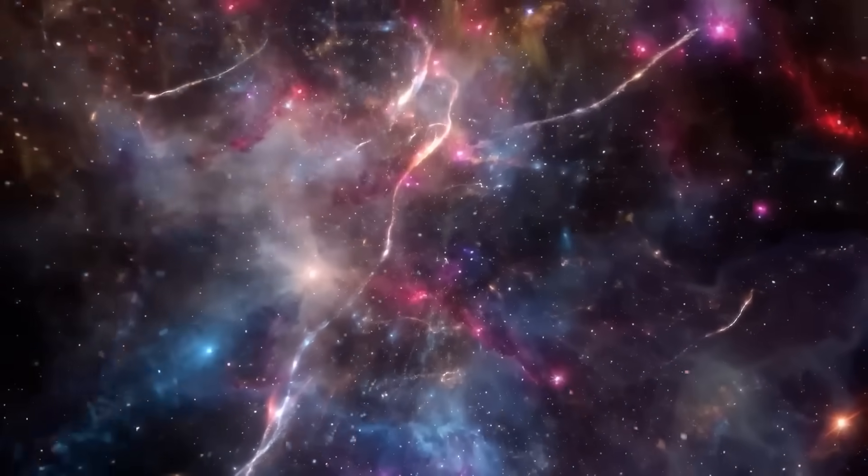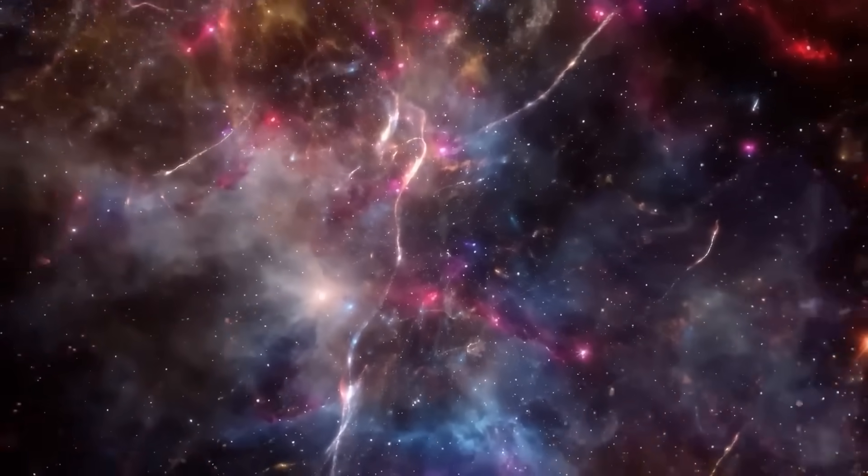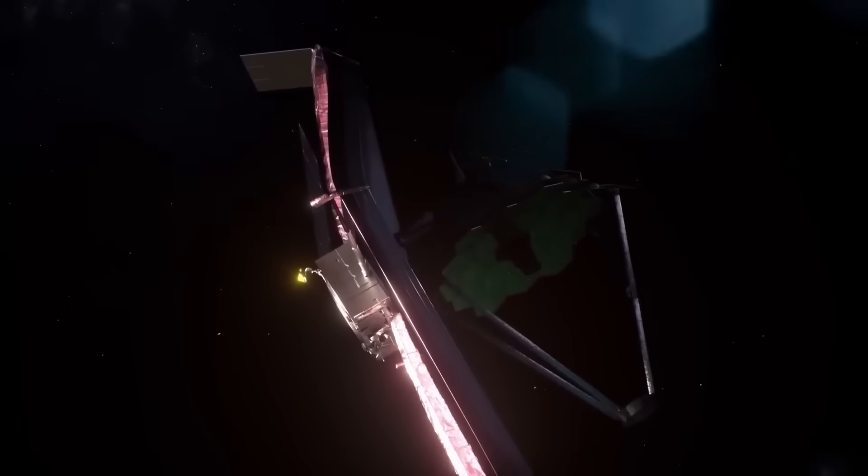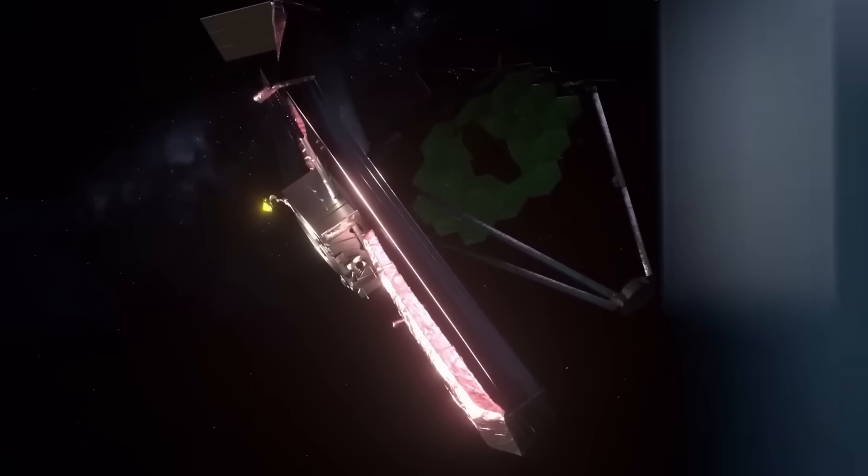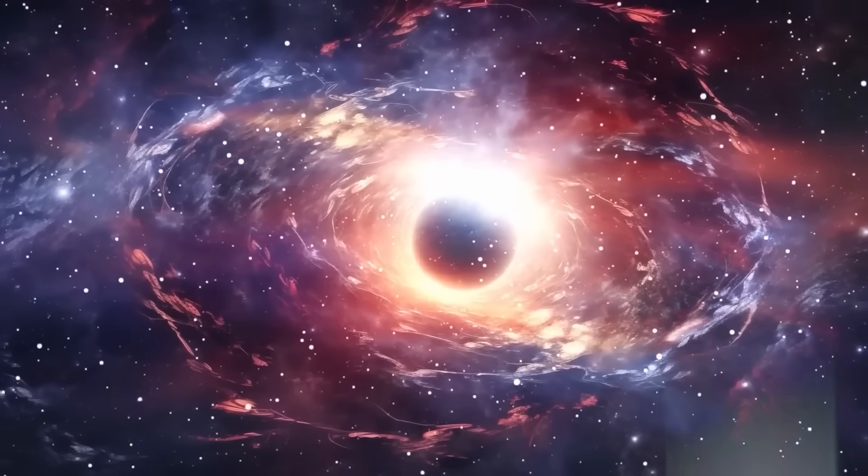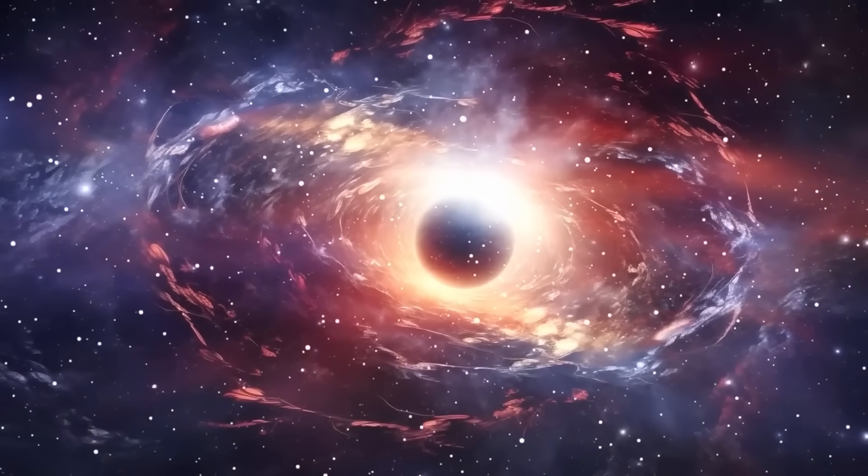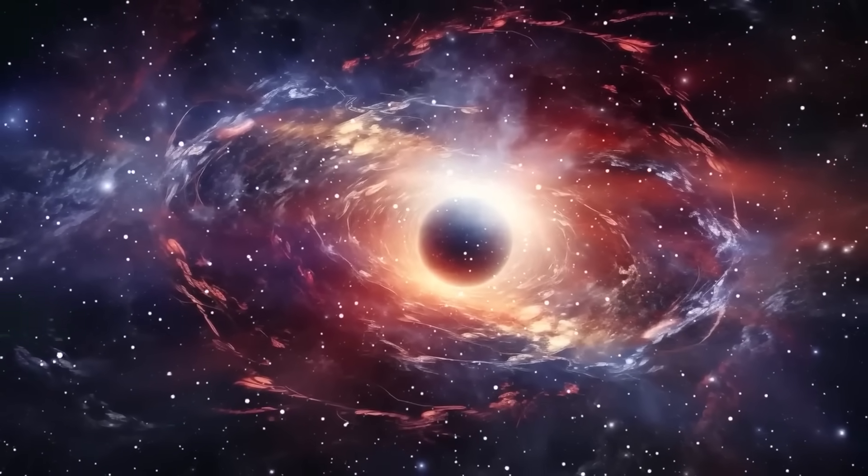This shatters the core assumption that large-scale structure is emergent from chaos. Instead, it hints at a governing pattern, a scaffolding laid out not by blind gravity but by some unknown rule embedded in the cosmos, a rule we didn't write. And if this symmetry is real, it raises a question darker than any: Are we living in a naturally evolved universe, or in one that was built?